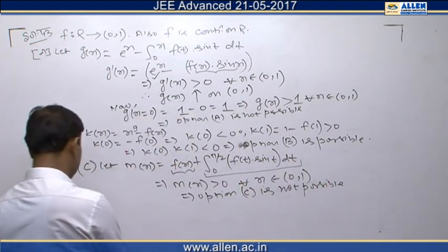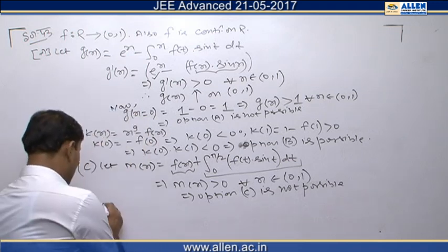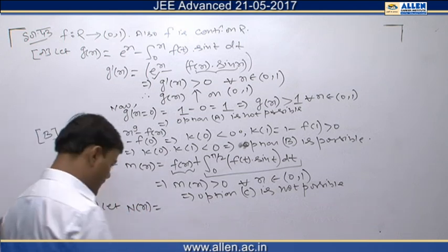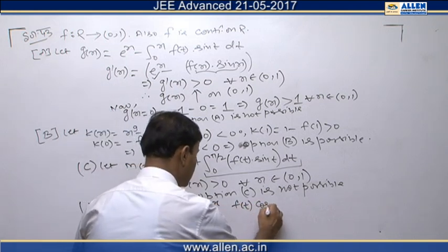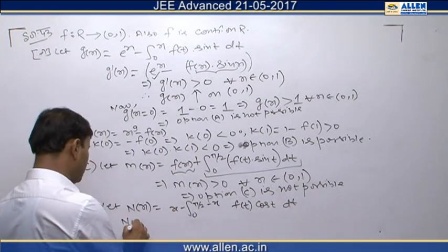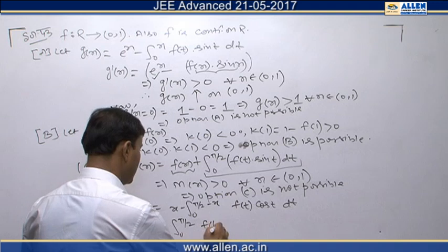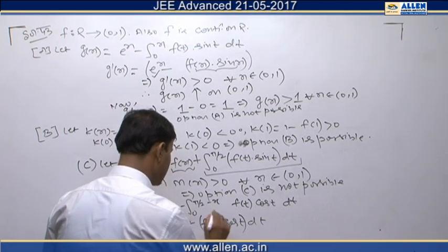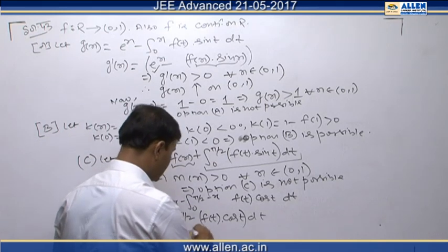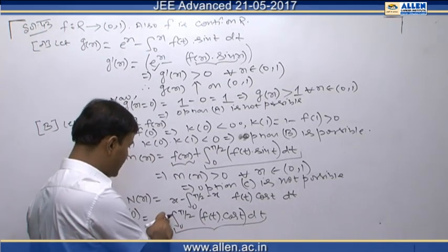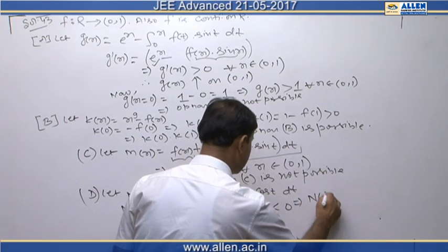Finally we check option D. We define n(x) = x minus the integral from 0 to (π/2 − x) of f(t)·cos(t) dt. At x = 0, the first term is 0, leaving minus the integral from 0 to π/2 of f(t)·cos(t) dt. Since f and cos(t) are both continuous and positive over (0, π/2), this integral is positive, and with the negative sign outside, n(0) is negative.